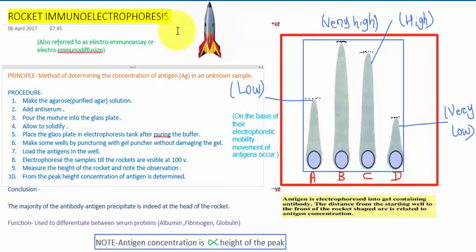So what is the principle behind it? It is generally used to determine the concentration of antigen in an unknown sample. It is also called electroimmunoassay or electroimmunodiffusion. Electro means an electric field is applied, immuno means the complex formed by the antigen and antibody, and diffusion means the movement towards each other.